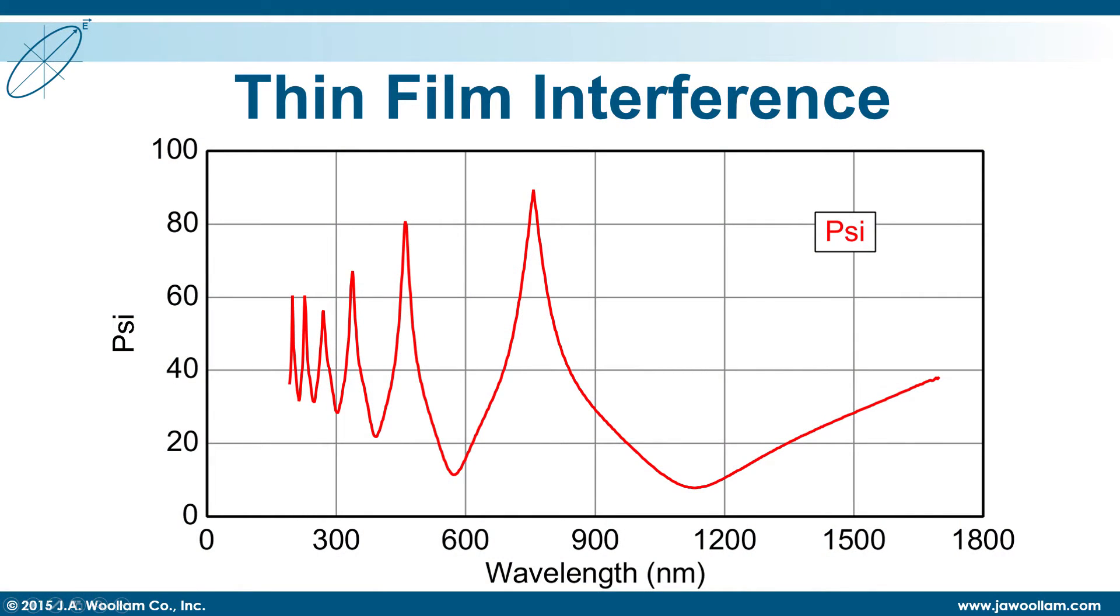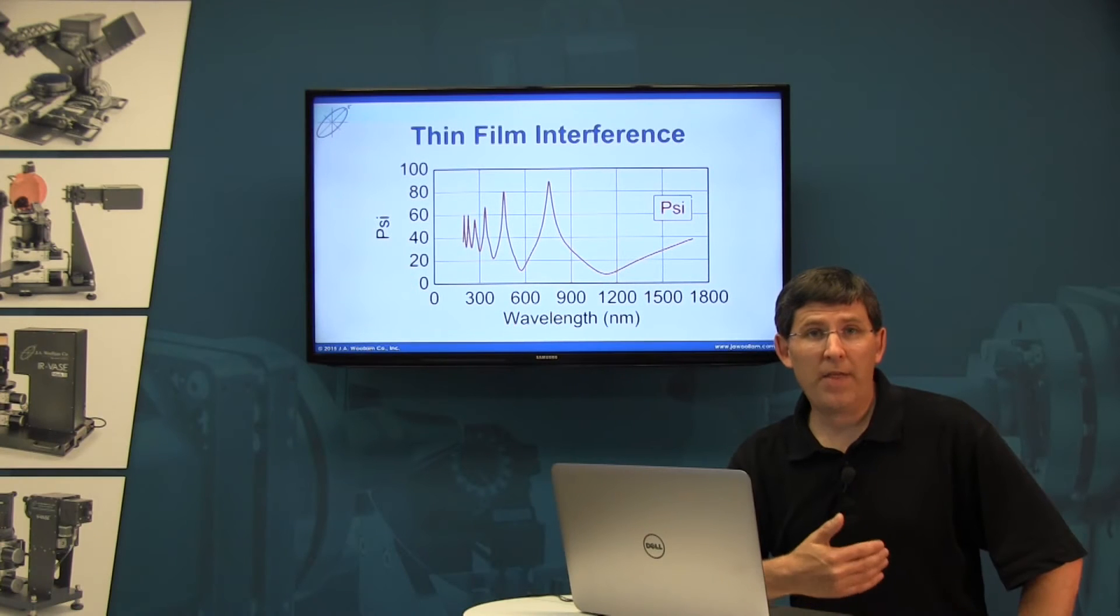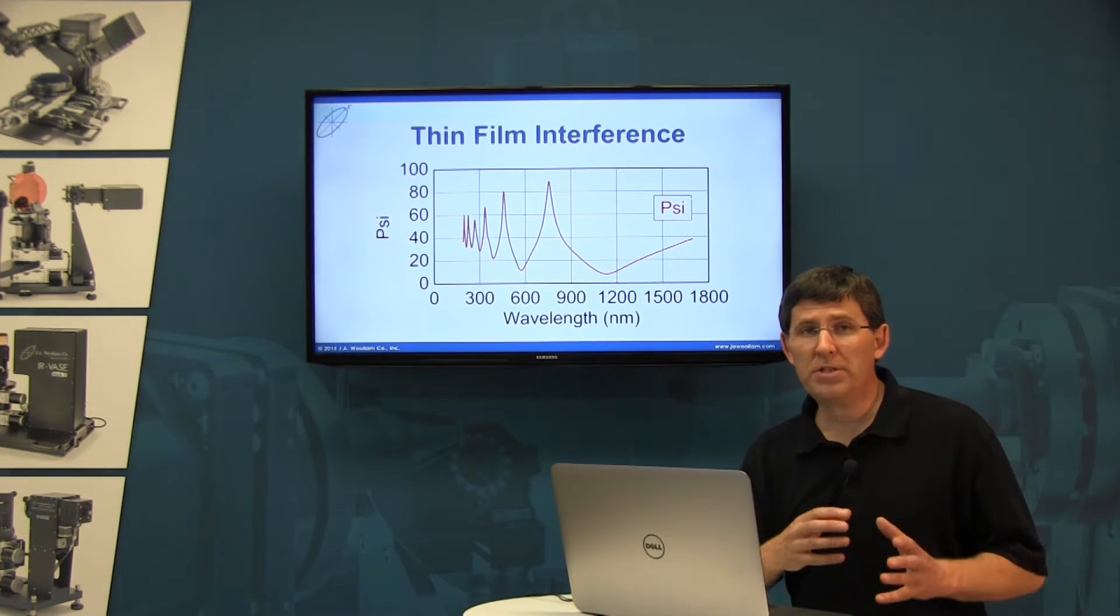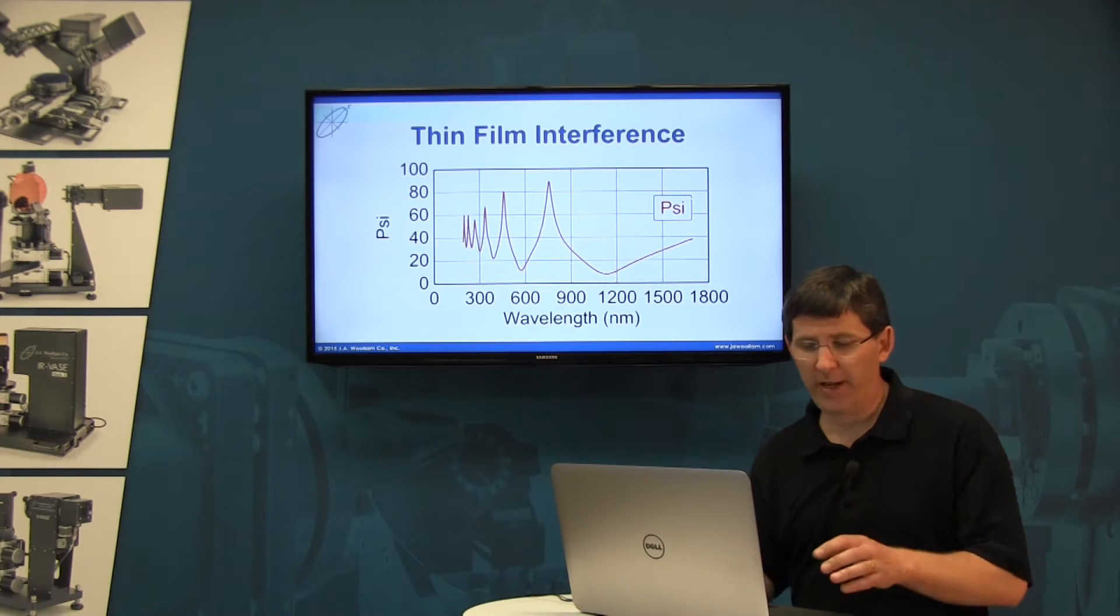Consider this data as an example. The oscillations in the data show me peaks and valleys, and that suggests that light is getting through my film. So what I'd like to do is use that information to tell how thick is the film.